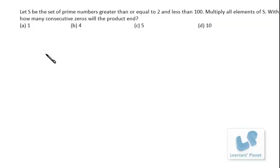That means we have to multiply all the prime numbers from 2 to 100. So it's 2 × 3 × 5 × 7 × 11 till it is 97. We have around 25 numbers to multiply.